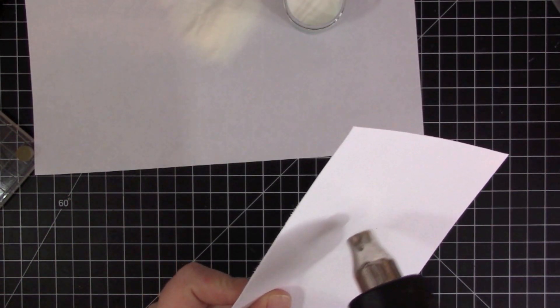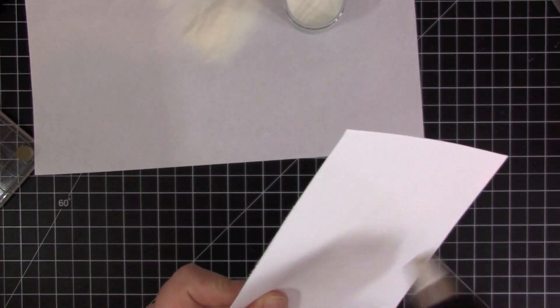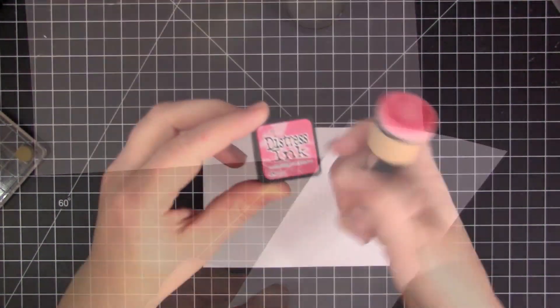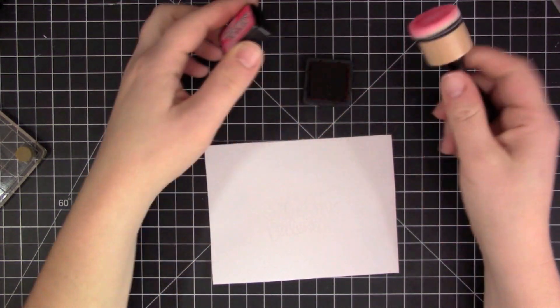Now I'm heat setting it, and what this is going to do is allow that sentiment area to resist ink that I'm going to add here now.